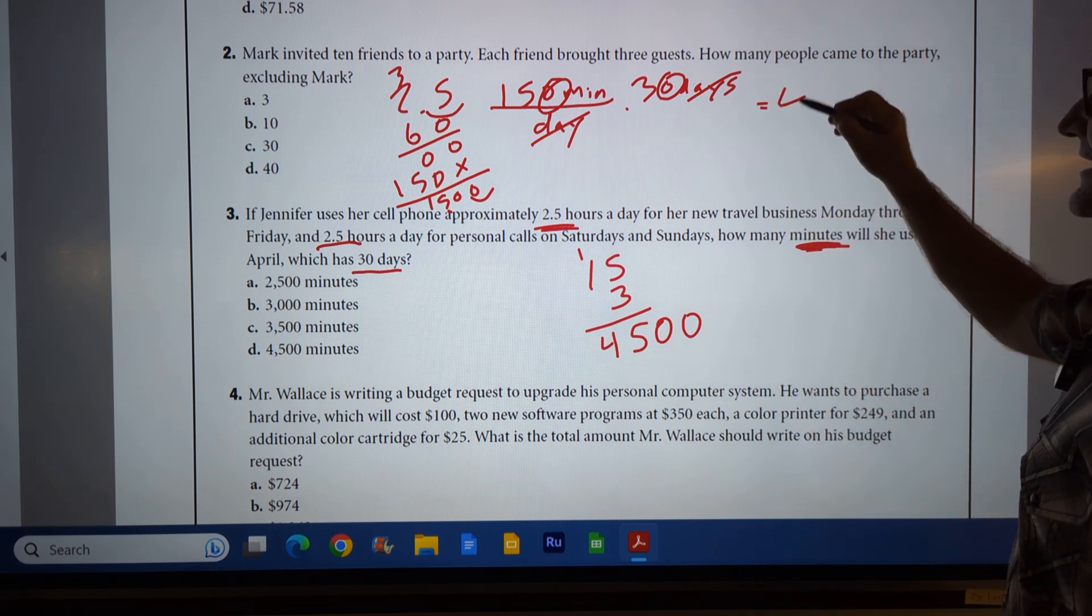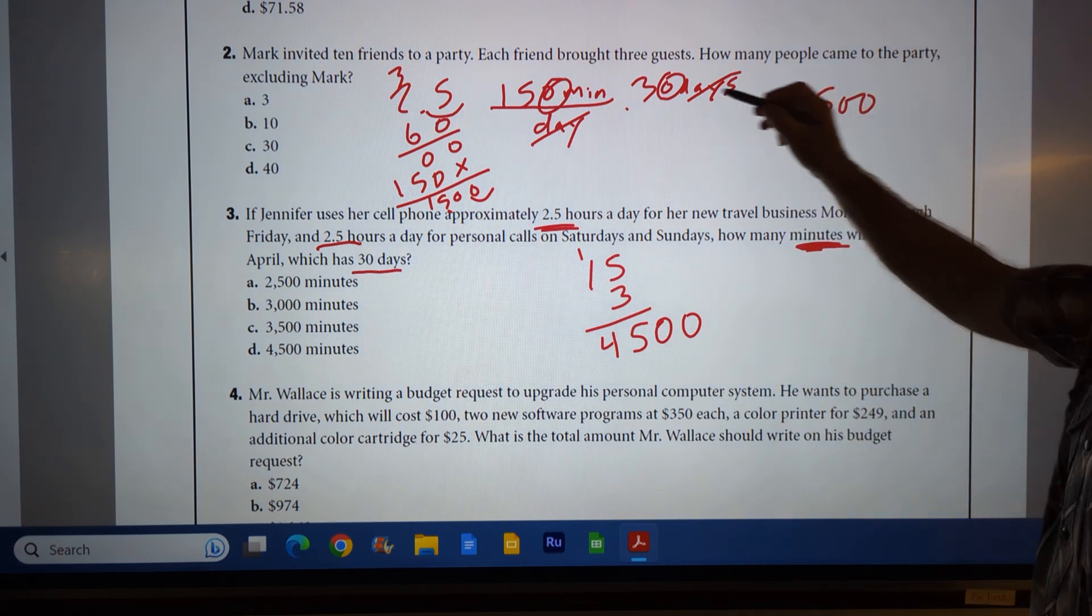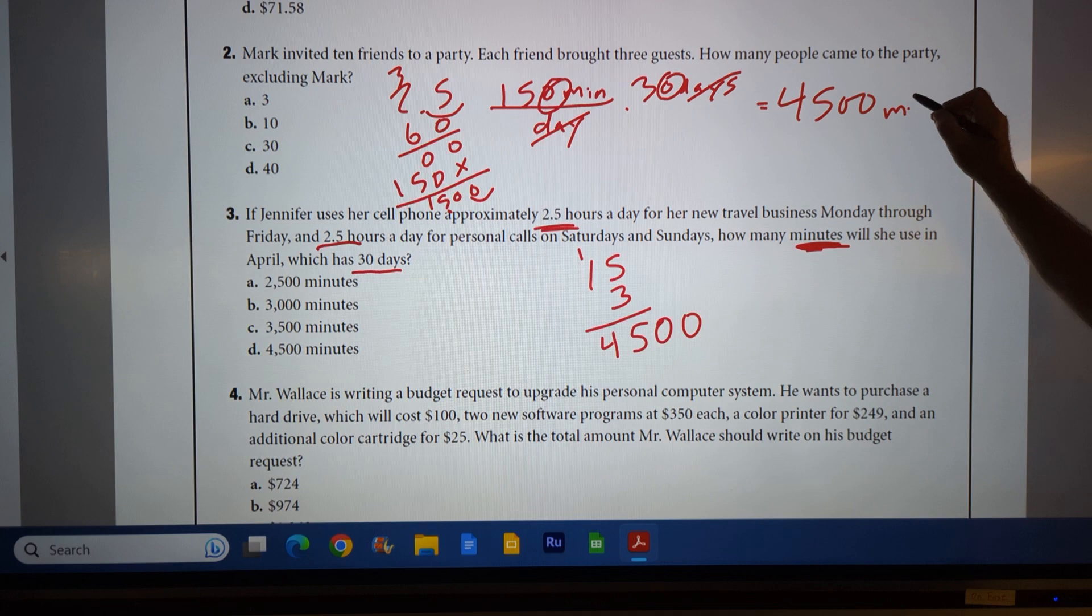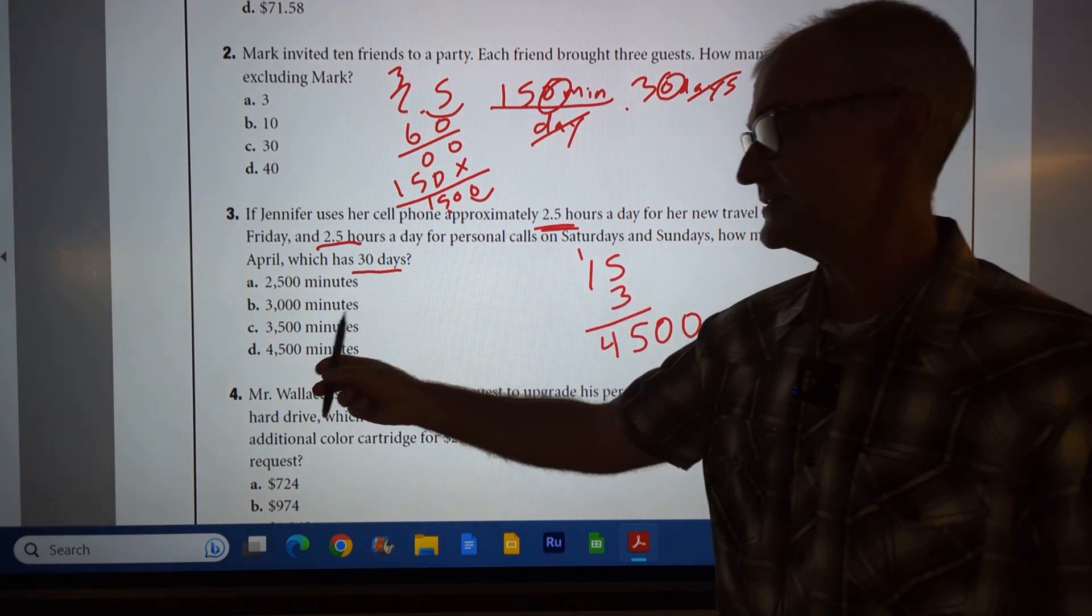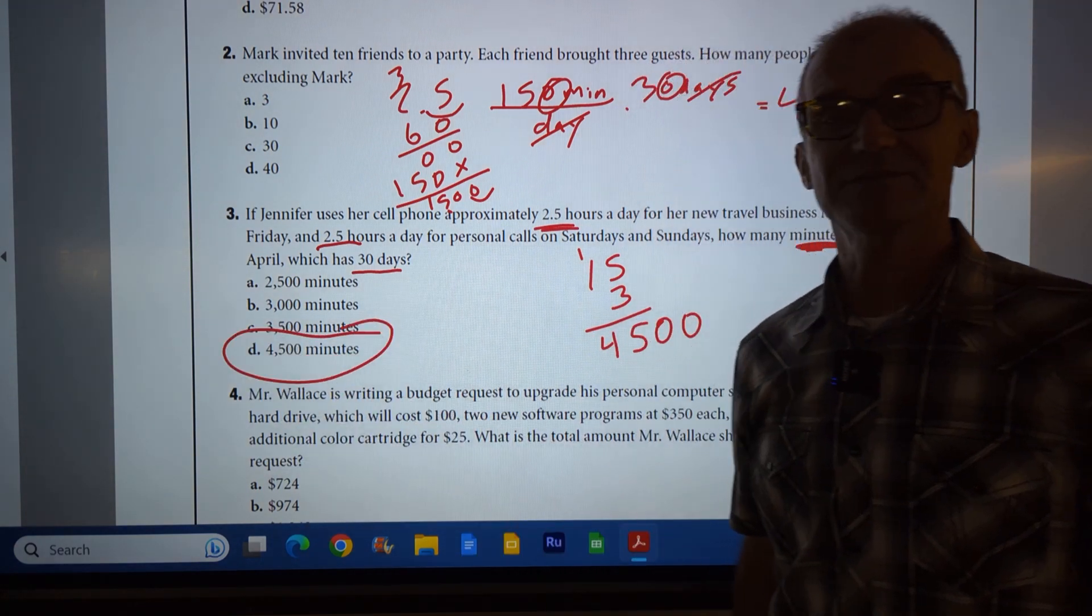So I have 45. I dropped that zero and that zero, so I got to add them back in. So I have 4,500, my units are minutes. That's what I was looking for. Correct answer, answer D, 4,500 minutes.